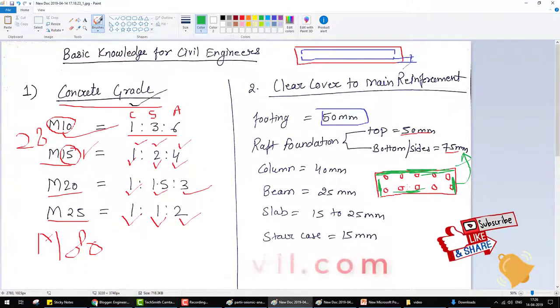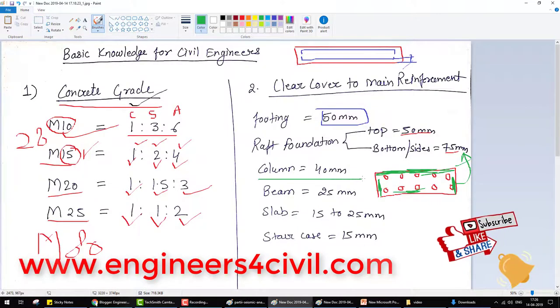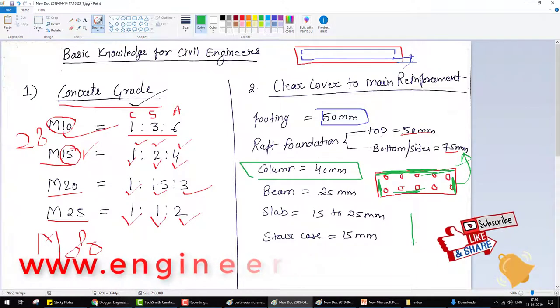In case of raft foundation, for column, 40mm. If this is the cross section of the column and this is the bar.